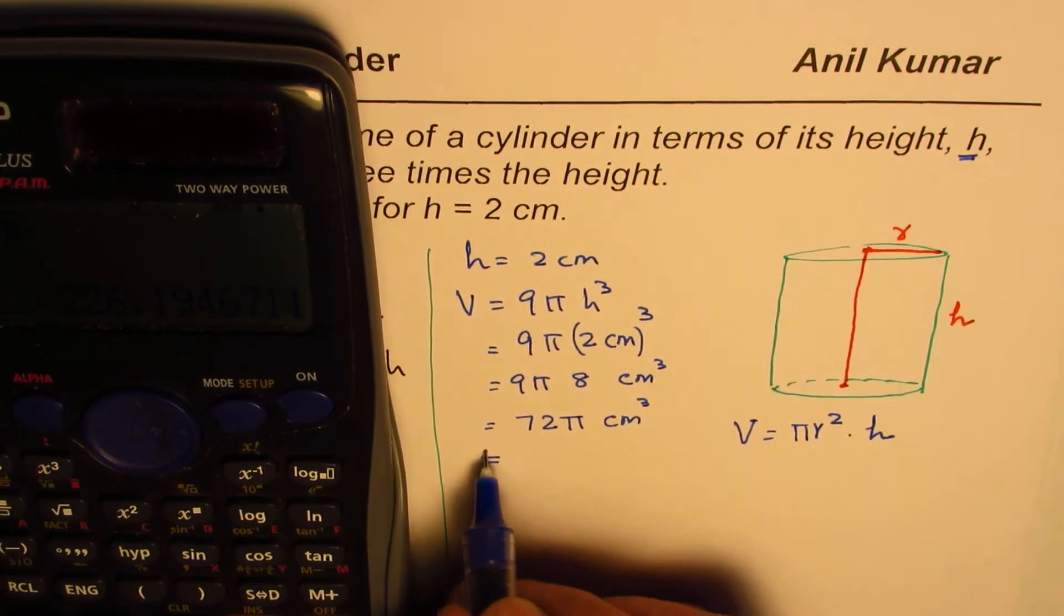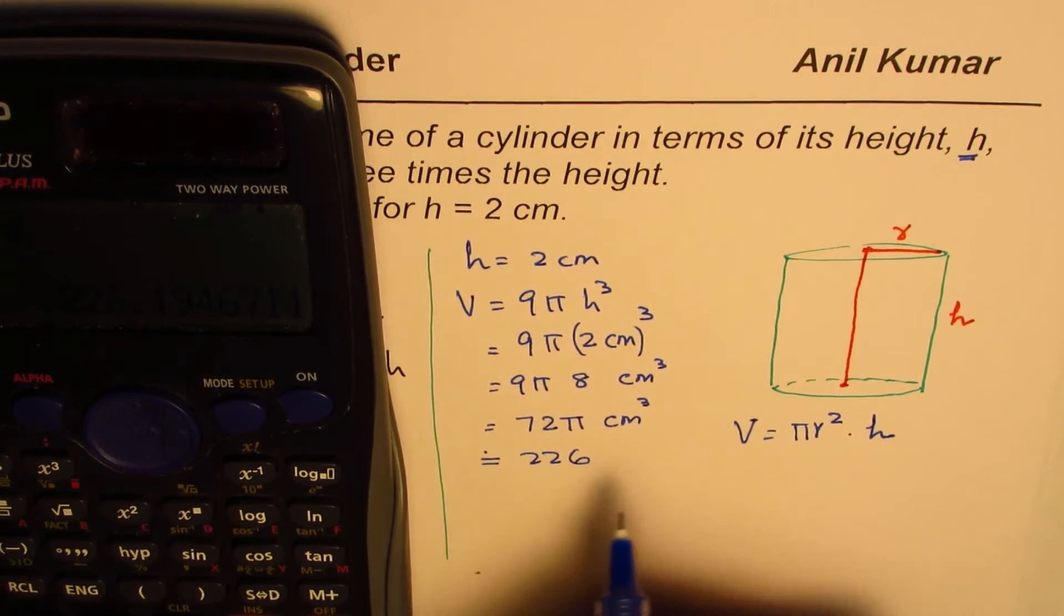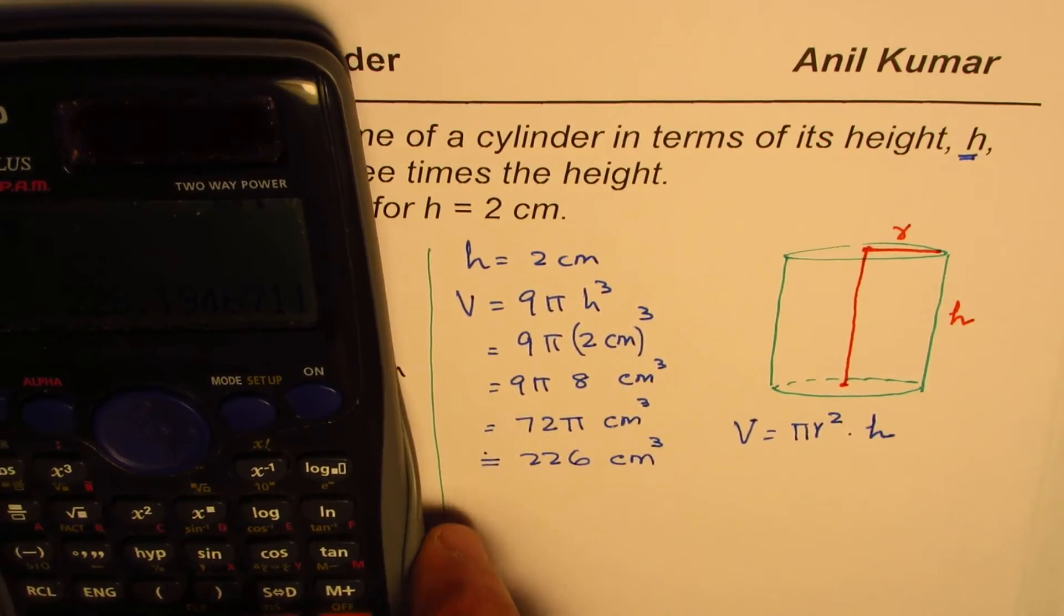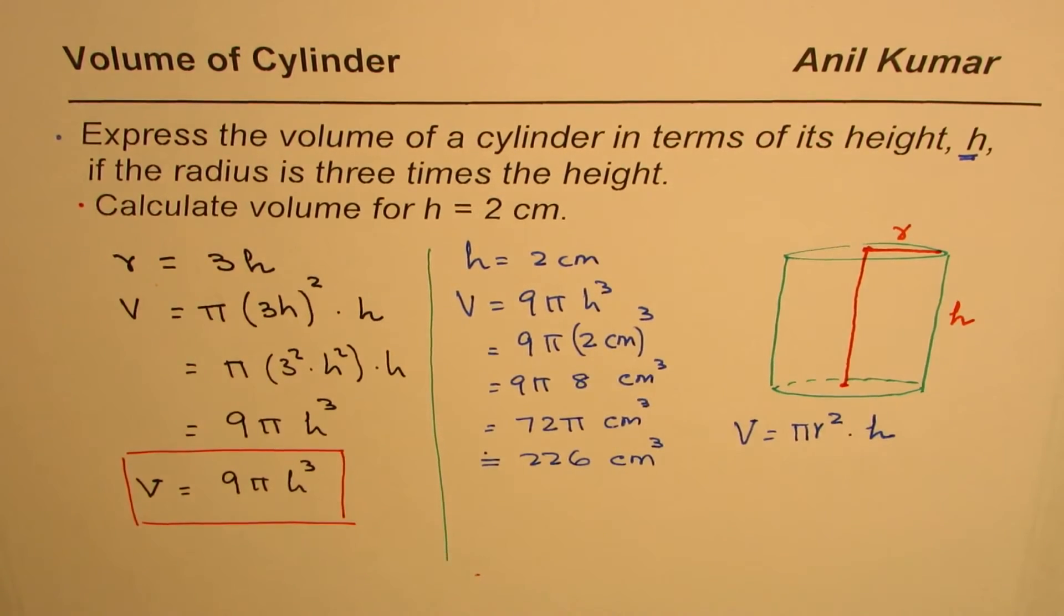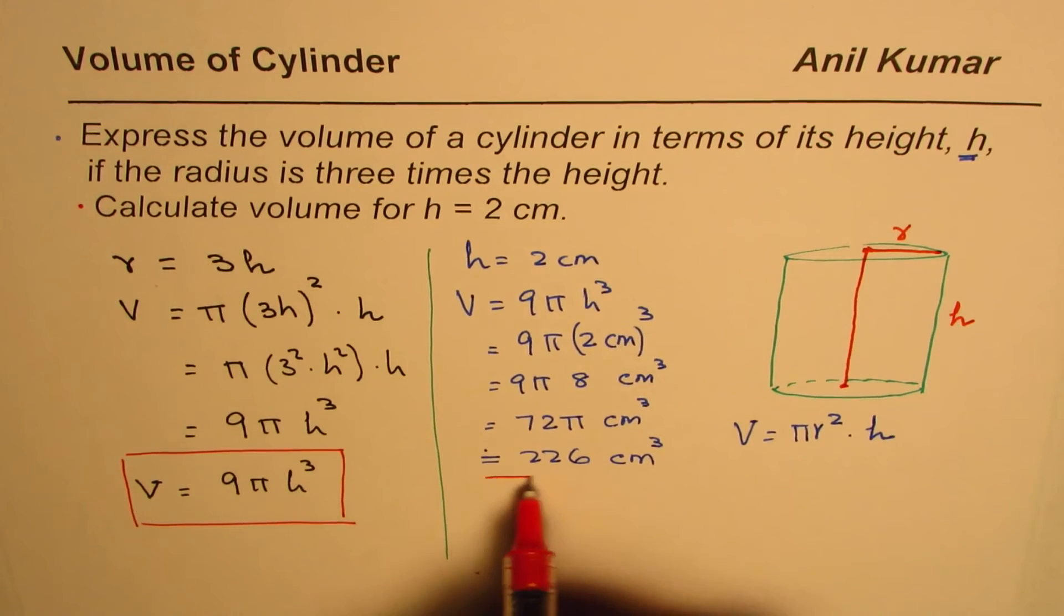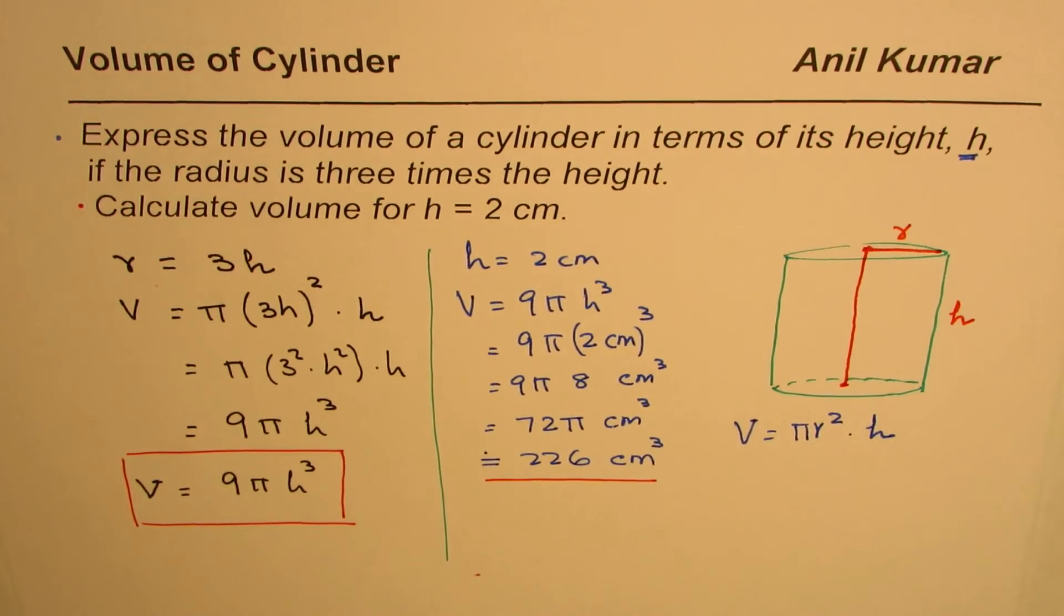226. We'll say approximately 226 cm³. So we could round it to whole numbers and write it as 226 cm³. So that becomes our answer for the volume when height is 2 centimeters.